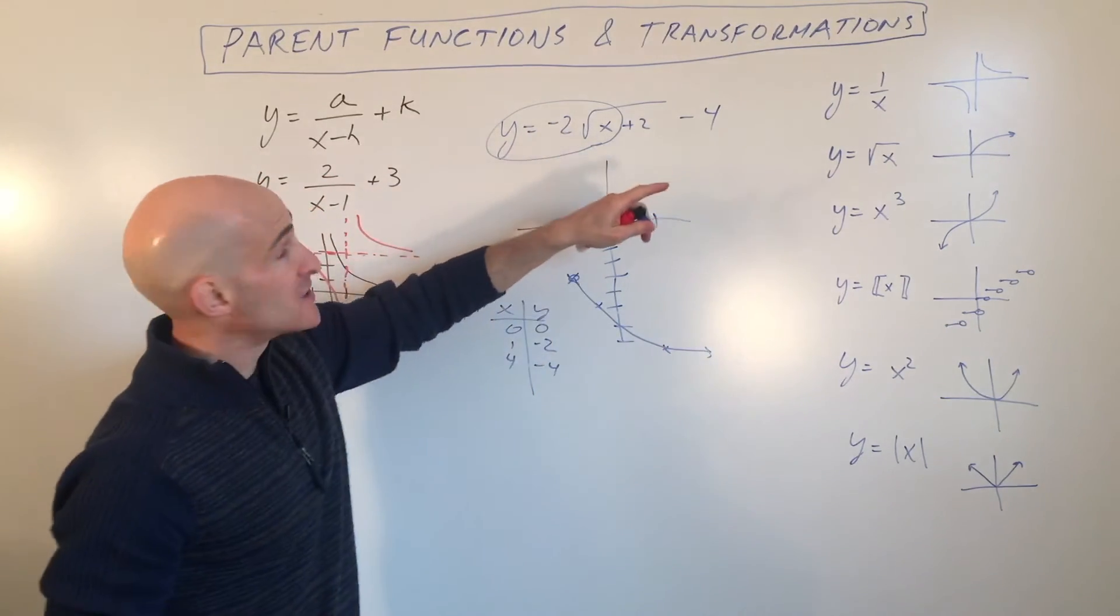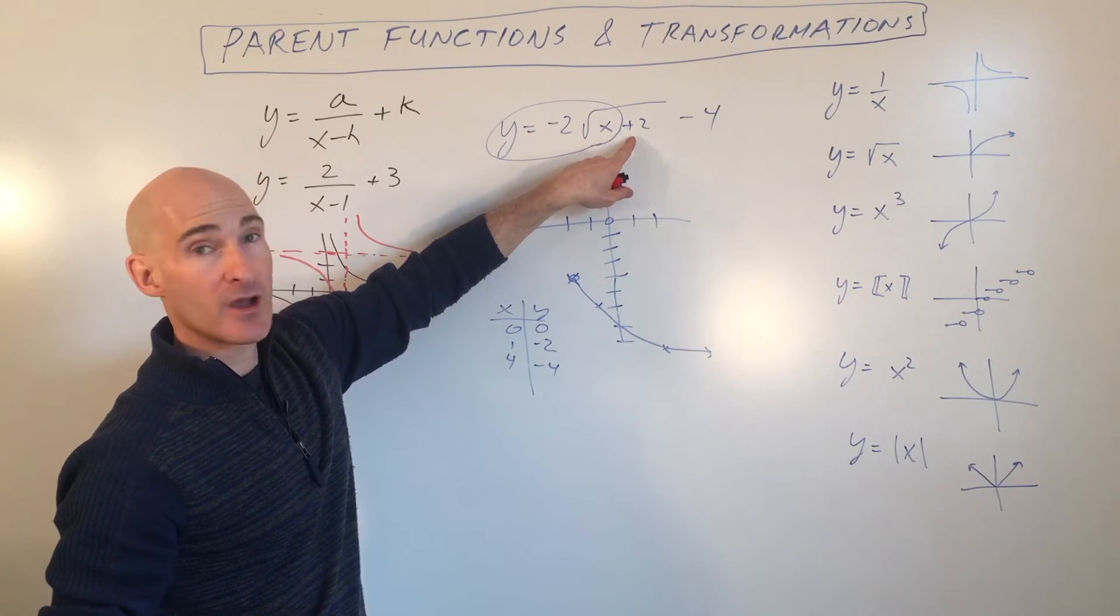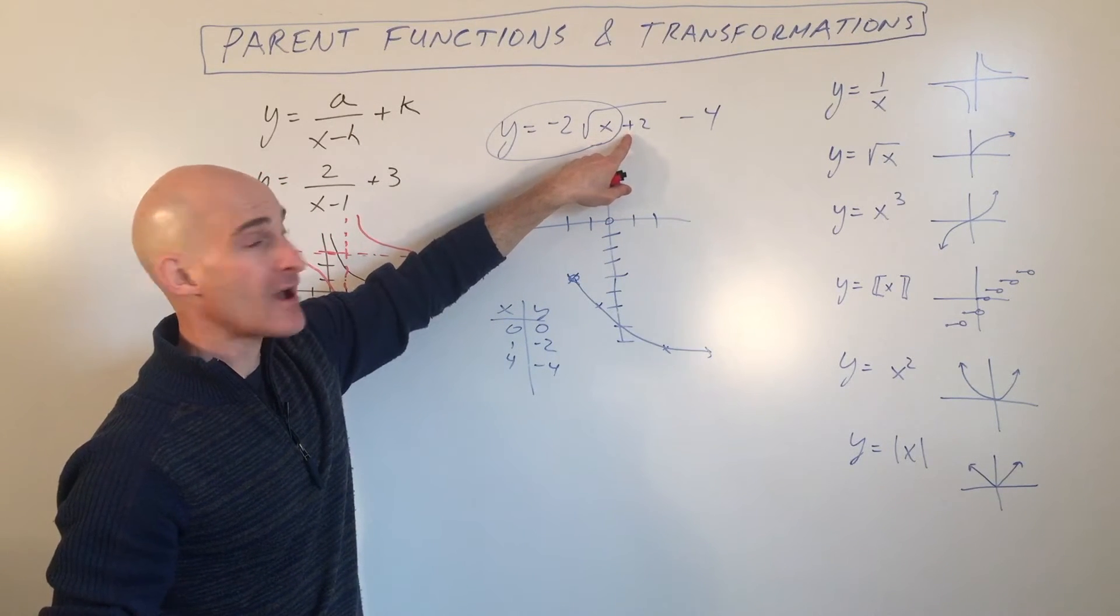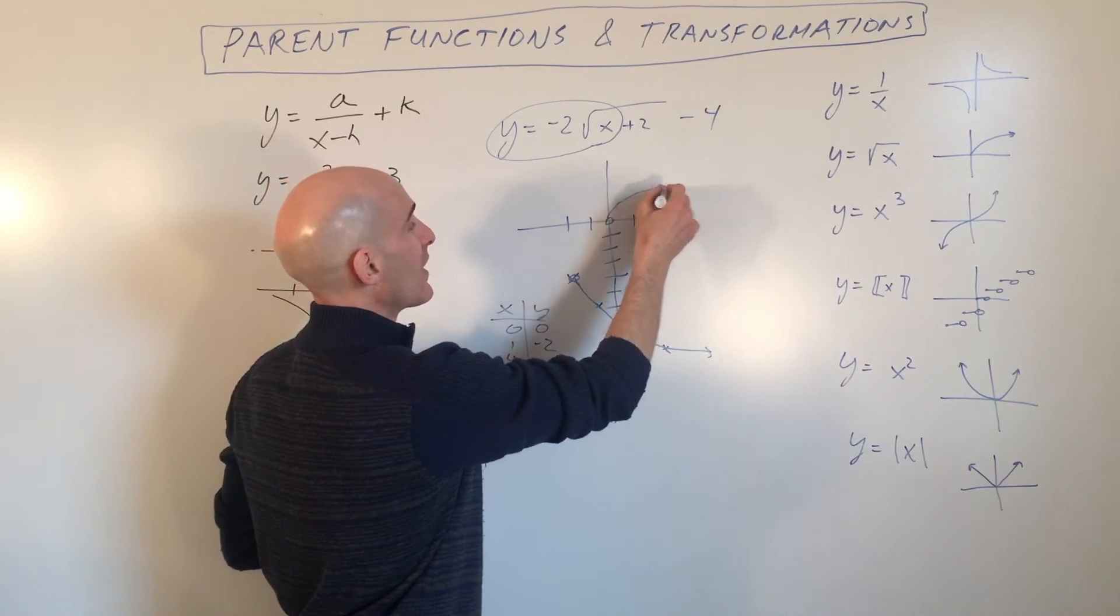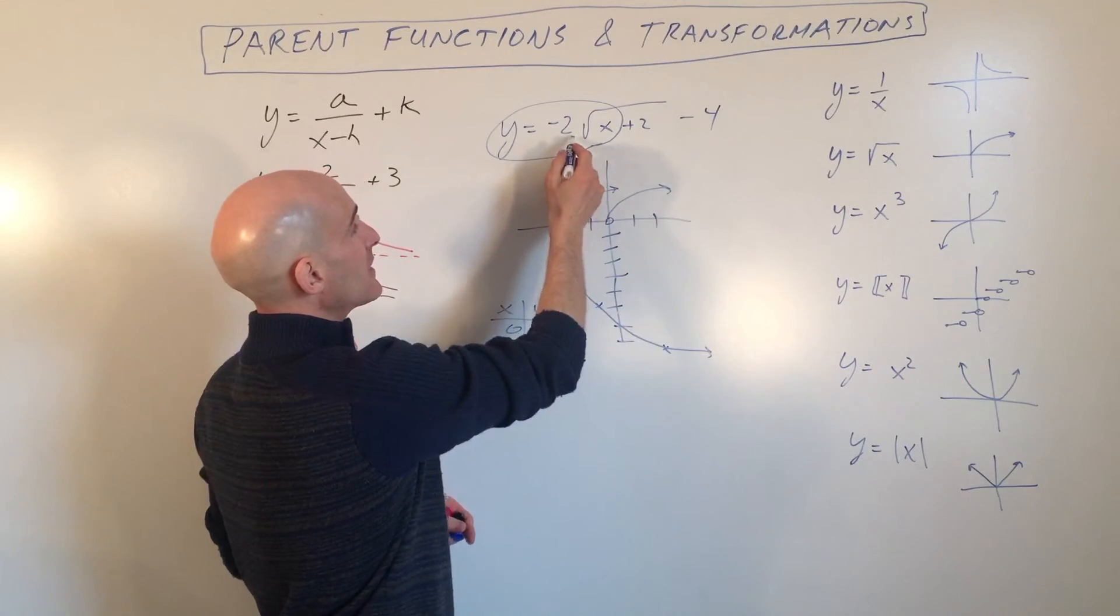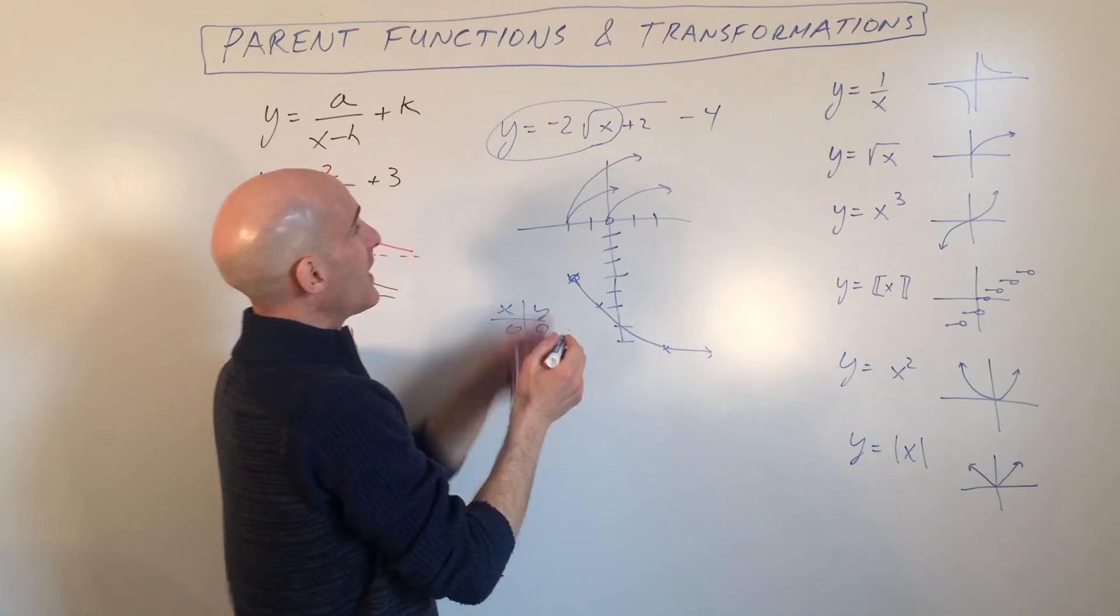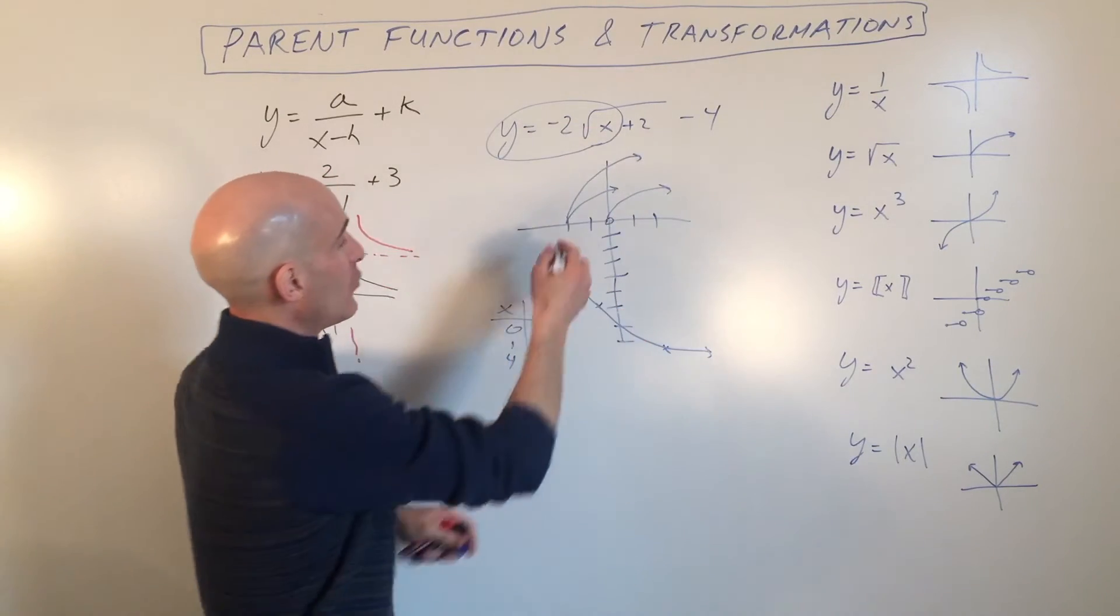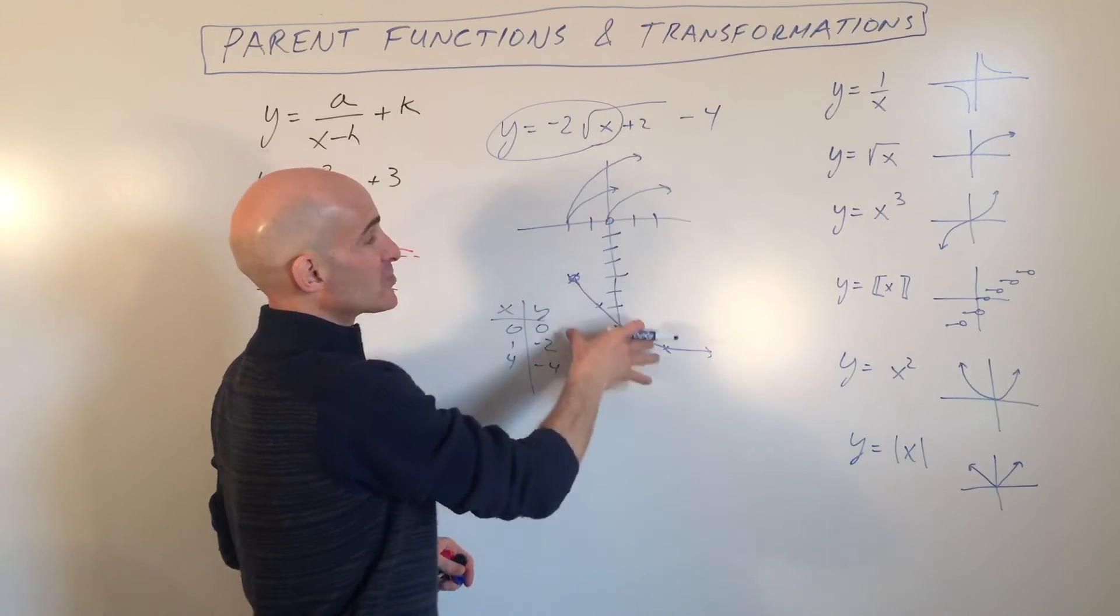So if you want to do this in order, you want to describe the translation and the transformation in order, you would start from the inside, just like you're working with the order of operations. You'd say this shifts left 2. So you start off with your basic graph, shifts left 2. It gets stretched by 2 times, so it's going to go up faster like that. The negative is going to reflect it over the x-axis, and then negative 4 is going to shift it down 4.